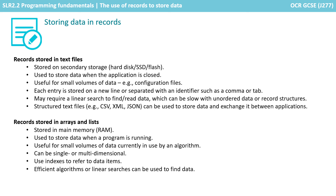Next, we looked at records stored in arrays or lists. This is when data is read from the file and stored in memory, used to store data while a program is running — again useful for small volumes of data an algorithm is using. The array can be single or multi-dimensional, allowing tables of data to be stored, and it uses an index to refer to data items. Efficient algorithms or linear searches can then be used to find the data in RAM.